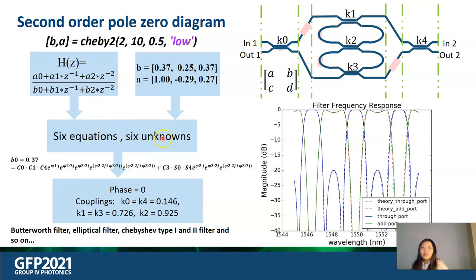We find that we have six equations and six unknowns. Here is an example how the equation looks like. The least-square-fitting method is used to solve these equations. After solving the equations, we get the following phase and coupling values. Then we build the circuit model of the coupled ring-loaded Mach-Zehnder with CAPHE simulator. And we can see that the spectral response of the circuit simulator matches well with the ideal digital filter response.